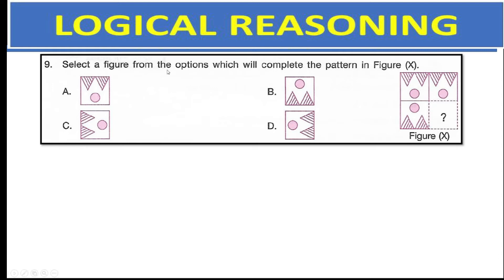Here you need to find the figure from the options which will complete figure X. There will be 2 more mountains here with this side marked and the circle that comes here — which is nothing but option B. That is the right answer.